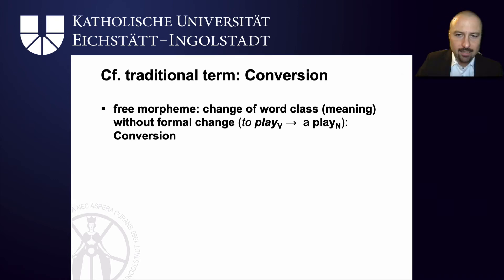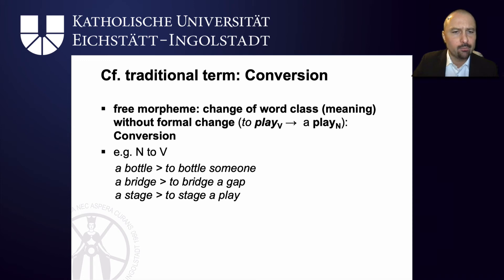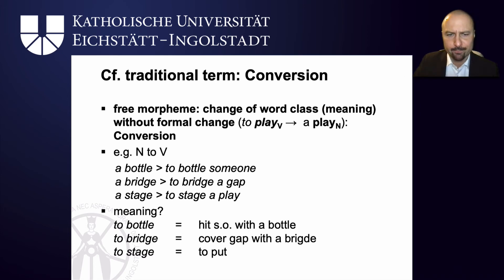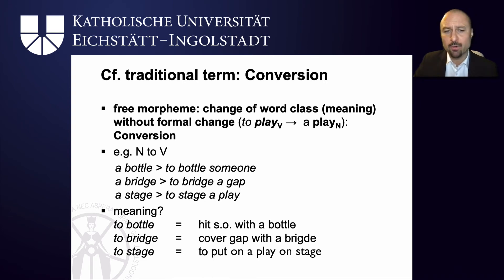Finally, we sometimes get cases of conversion, where a free morpheme changes its word class and consequently its meaning but there is no formal change. To play can become a play. The process of conversion happens, for example, with nouns to verbs, and in English it is quite frequent: a bottle can become to bottle someone, a bridge can become to bridge a gap, and a stage can become to stage a play. Again the meaning is frame-based and encyclopedic — to bottle is to hit someone with a bottle, to bridge is to cover a gap with a bridge, and to stage is to put on a play.